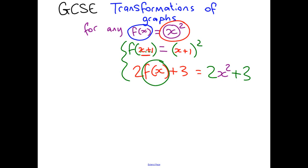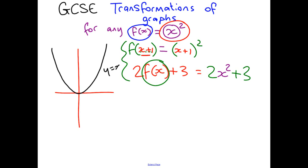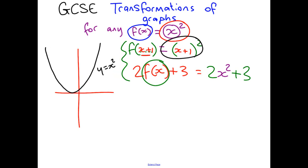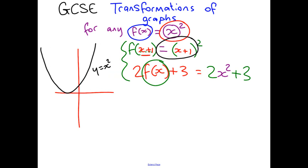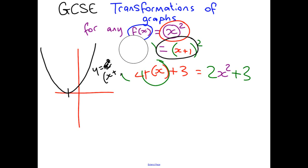Now if we're sketching graphs and we already know what the graph of f(x) equals x squared looks like, we can actually cheat and find out what the new graph is without starting from scratch. I know that this is going to be moving it to the left by 1, giving a new sketch of (x+1) squared. I'm going to show you how we can relate these to the graphs so you can learn all the rules.